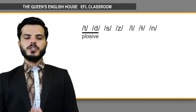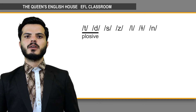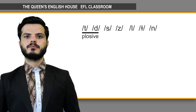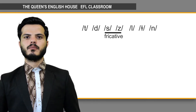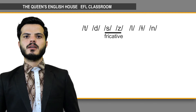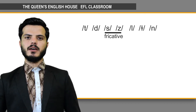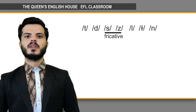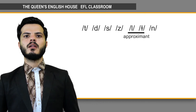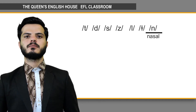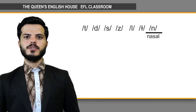The first two sounds, t and d, are plosive sounds. S and z are fricative sounds. L and l are approximants, and n is a nasal sound.